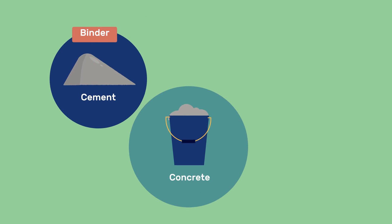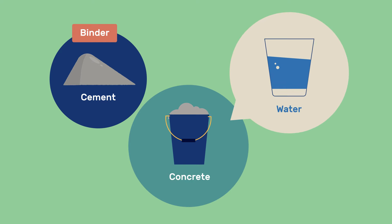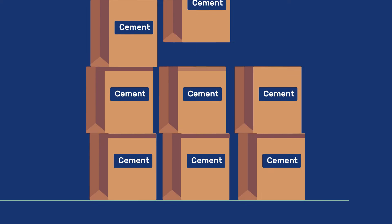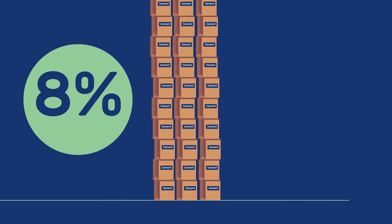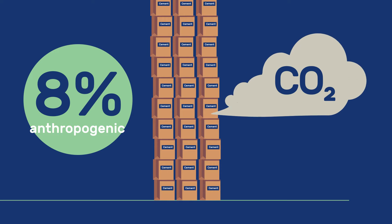Cement is the binder in concrete, the most used material after water. It is produced in very large amounts, which amplifies its environmental impact, causing it to account for about 8% of anthropogenic CO2 emissions.